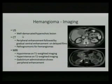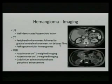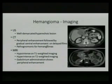For imaging: on ultrasound, it shows a well-demarcated hyperechoic lesion because of all the vasculature. On CT, the classic finding is peripheral enhancement followed by gradual central enhancement on delayed films — described as centripetal filling. It starts peripherally and then lights up centrally, which is pathognomonic for hemangioma. If you have that finding, you don't need any other imaging — you have your diagnosis.